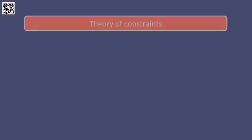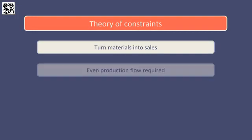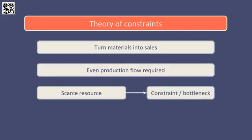Let's start by looking at the theory of constraints. This theory was formulated by Goldratt and Cox in 1986. The principle is that a business wants to turn materials into sales as soon as possible, to maximise the cash generated from those sales, and as a result an even production flow is required to achieve this. Clearly if we want to maximise profitability, we want to ensure that we maximise our output of all profitable products, but sometimes this is not possible as there is a scarce resource or other factor that limits our output levels. We call this the constraint or bottleneck.